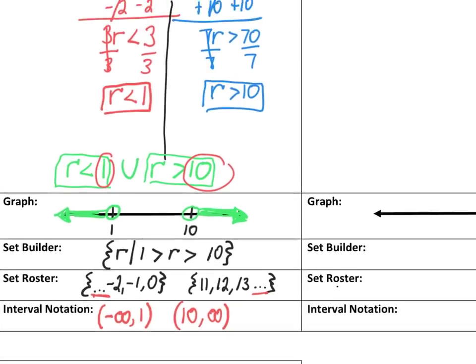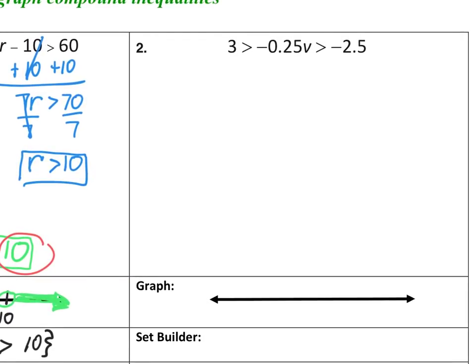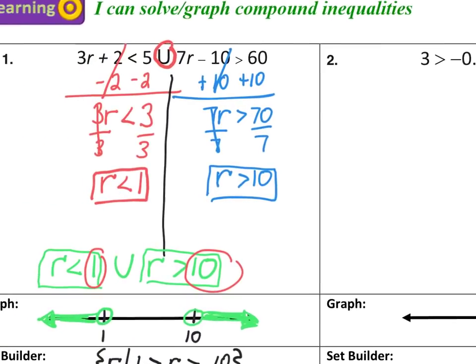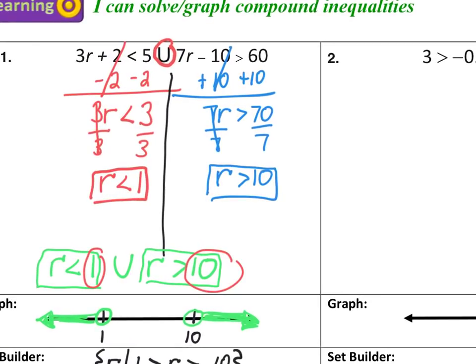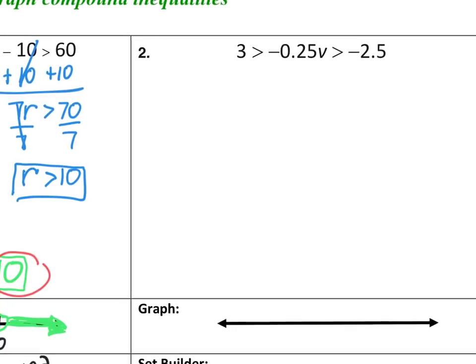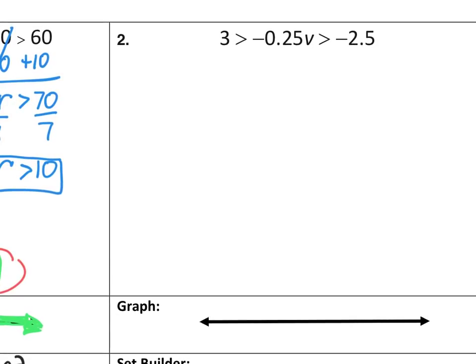The second inequality we are going to solve is already in set builder notation. There's a variable in the middle and two inequalities surrounding it, which is a little different from the first one we did — that had two completely separate inequalities with an OR symbol. So here I have to stay organized, and I'm going to put lines surrounding my inequality symbols to make sure I'm positioning everything correctly. The middle says negative 2,500 times V.